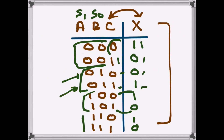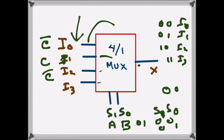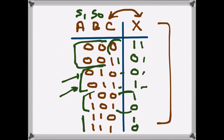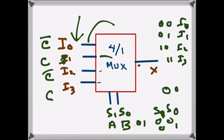Finally, when S1 S0 is 1 1, the fourth input line I3 is selected and goes to the output. Again we check how C and X are related: when C is 0, X is 1, and when C is 1, X is 0 — they are inverted. So I3 is also C-bar. This completes our design using A and B as select inputs, with S1 = A and S0 = B.